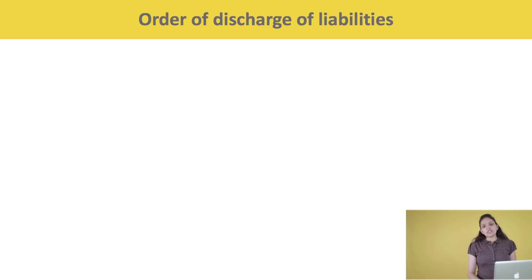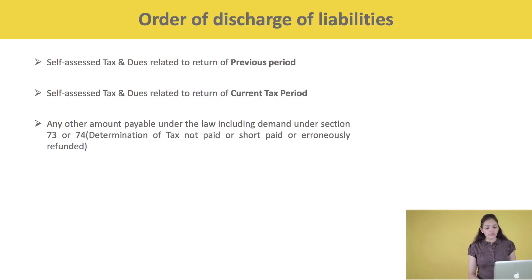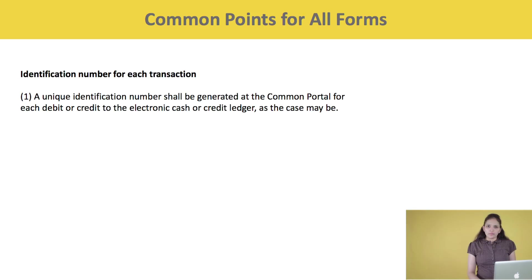The order of discharge of liabilities is as follows: First, self-assessed tax and dues related to the return of previous tax periods shall be settled. Second, self-assessed tax and dues relating to the current tax period will be settled. Lastly, any other amount payable under the law, including demand under section 73 or 74 — i.e. determination of tax not paid, short paid, or erroneously refunded — shall be discharged in this order. A unique identification number shall be generated at the common portal for each debit or credit to the Electronic Cash or Credit Ledger.